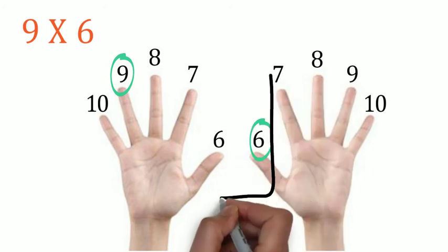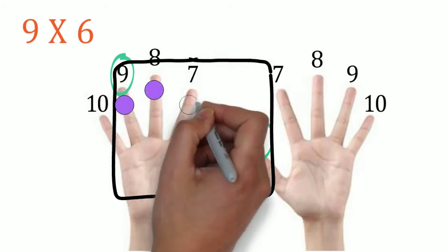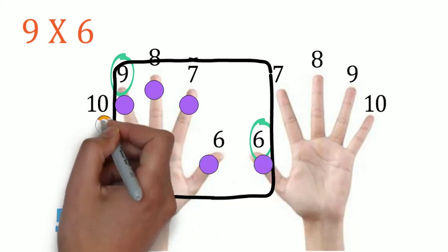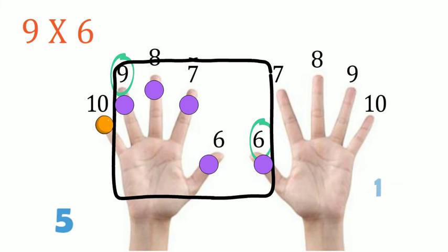Now count how many fingers are there in the center: five. Next, look at the fingers on the left. How many are there? One. And on the right there are four. So one times four is four. So that's the answer: 54.